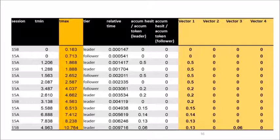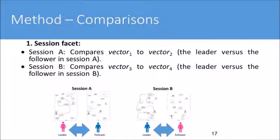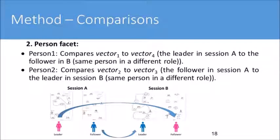These four vectors are used in subsequent calculations as vectors characterizing the four combinations of role and session. In each dialog pair, we conducted four comparisons among these vectors relating to session and person facets. The session A comparison compares vector 1 to vector 2 (leader vs. follower in session A). Session B compares vector 3 to vector 4 (leader vs. follower in session B). For the person facet: person 1 compares vector 1 to vector 4 (leader in session A to follower in B), and person 2 compares vector 2 to vector 3 (follower in session A to leader in session B) — same person in a different role.